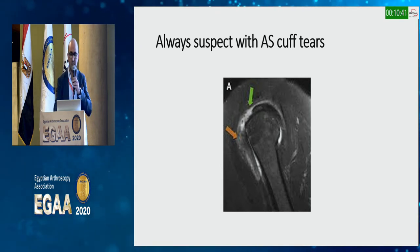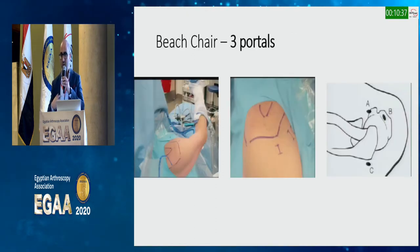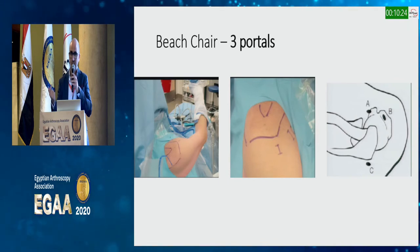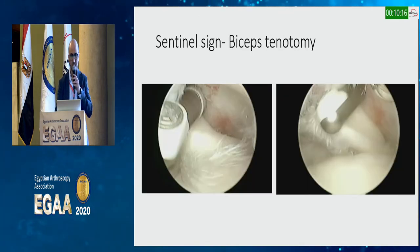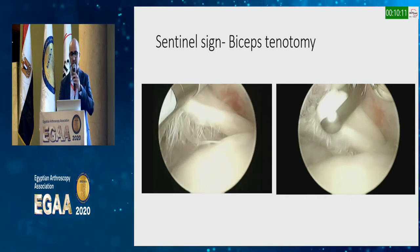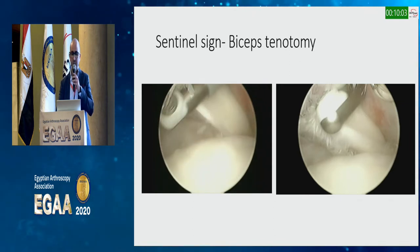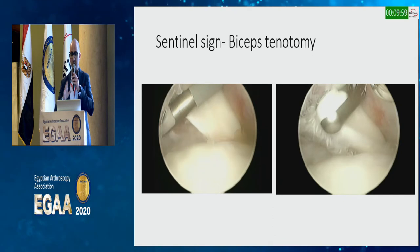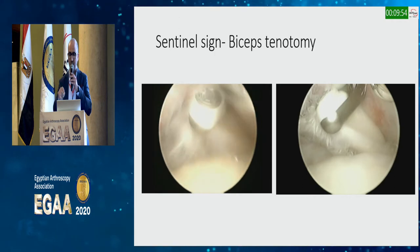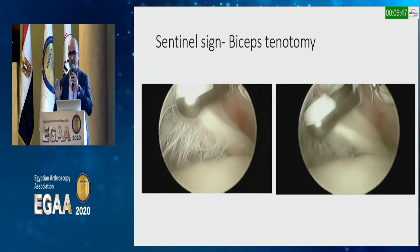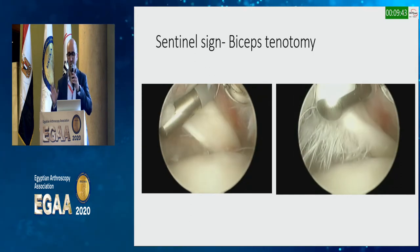When I see an antero-superior cuff tear, I always suspect a subscap tear. I use beach chair position with three portals: a posterior viewing portal, an antero-superior portal, the regular anterior portal through the interval, and an antero-lateral portal. If you see severe undersurface fraying on the biceps — the sentinel sign — this means the biceps is rubbing on the subscap tear. I always start by doing a biceps tenotomy as the first step.